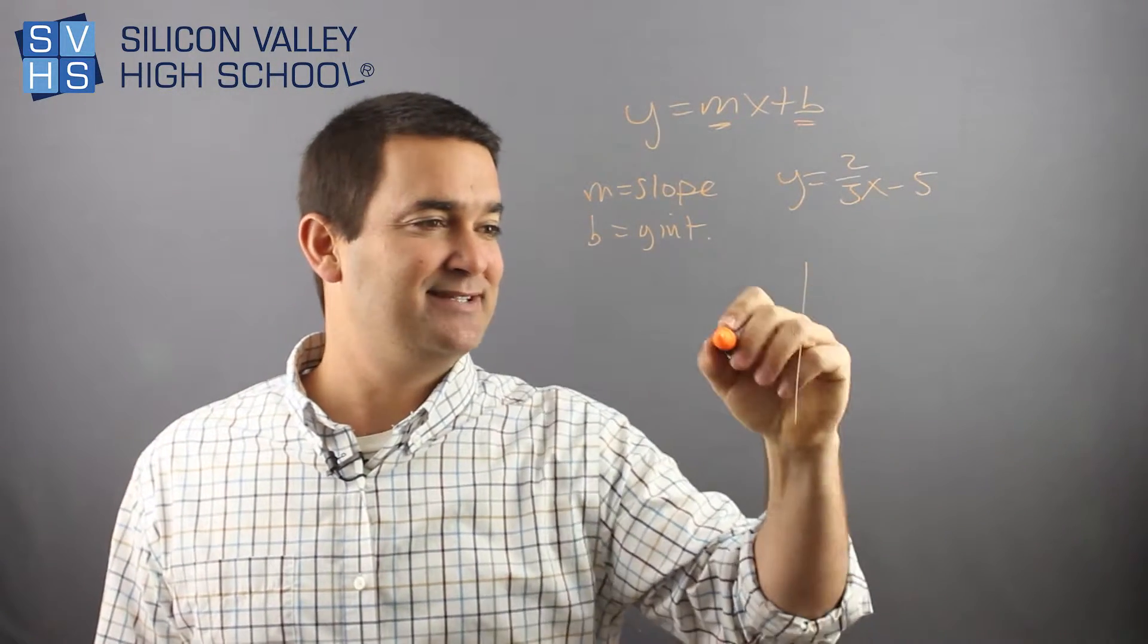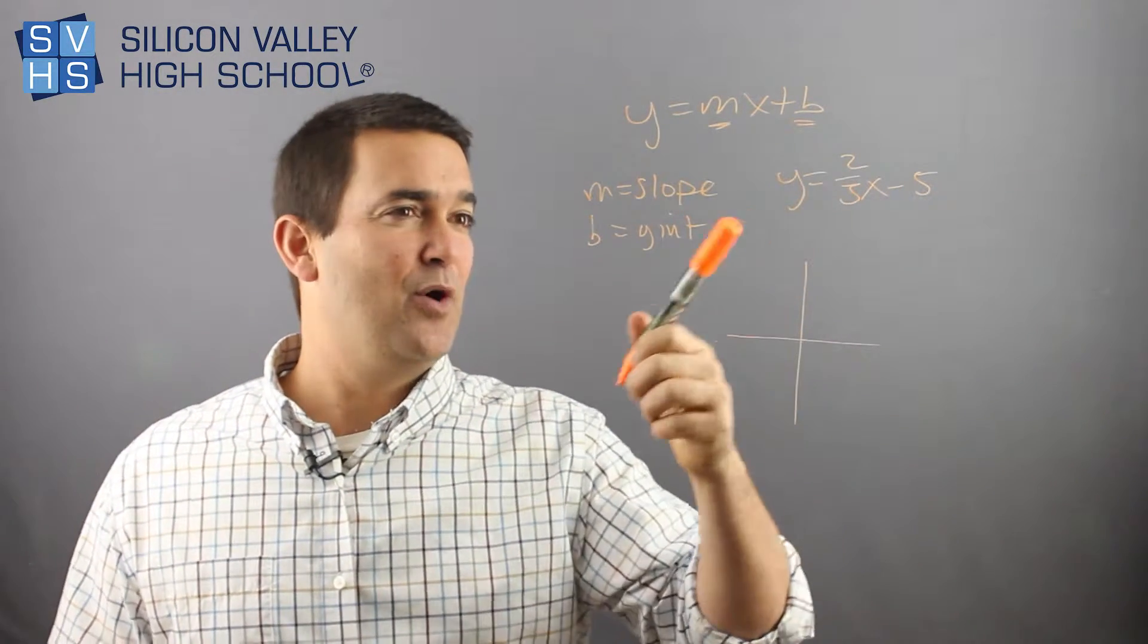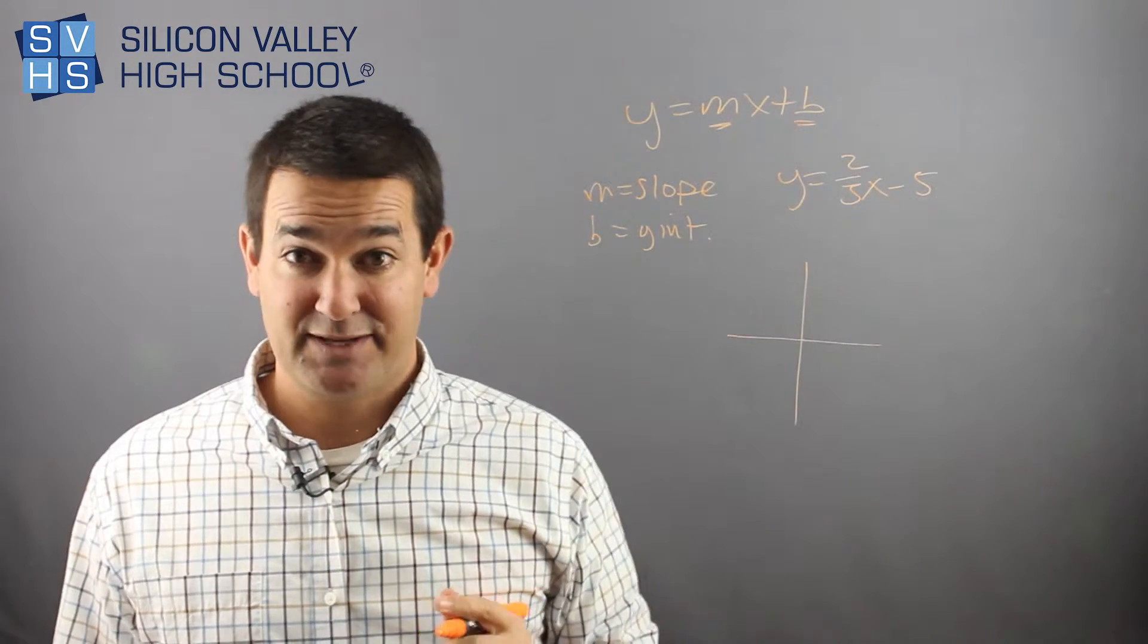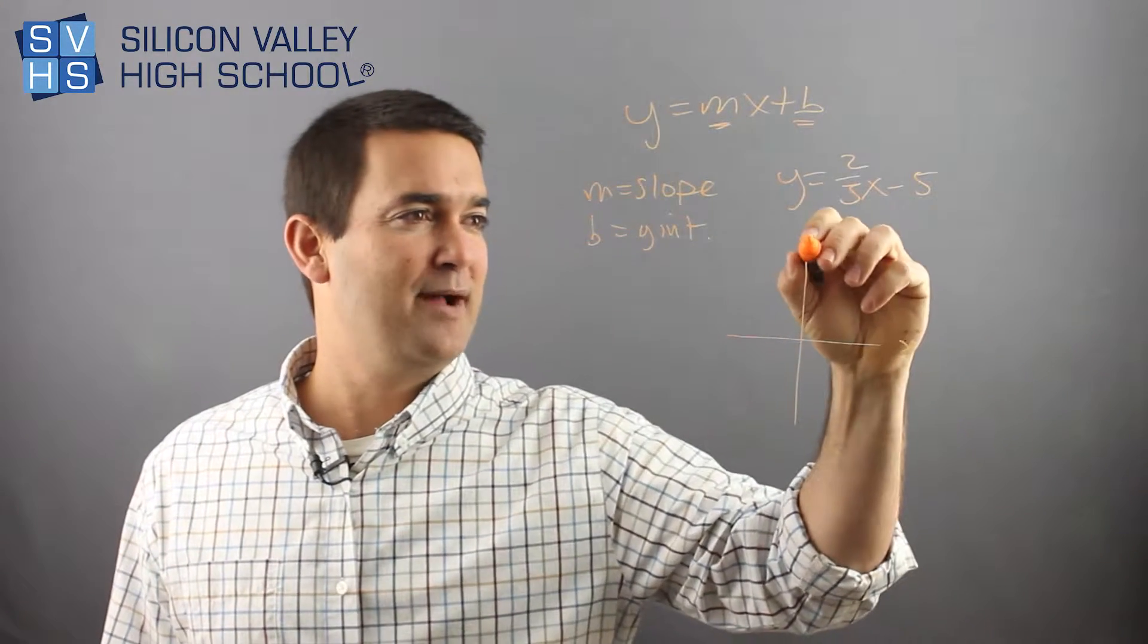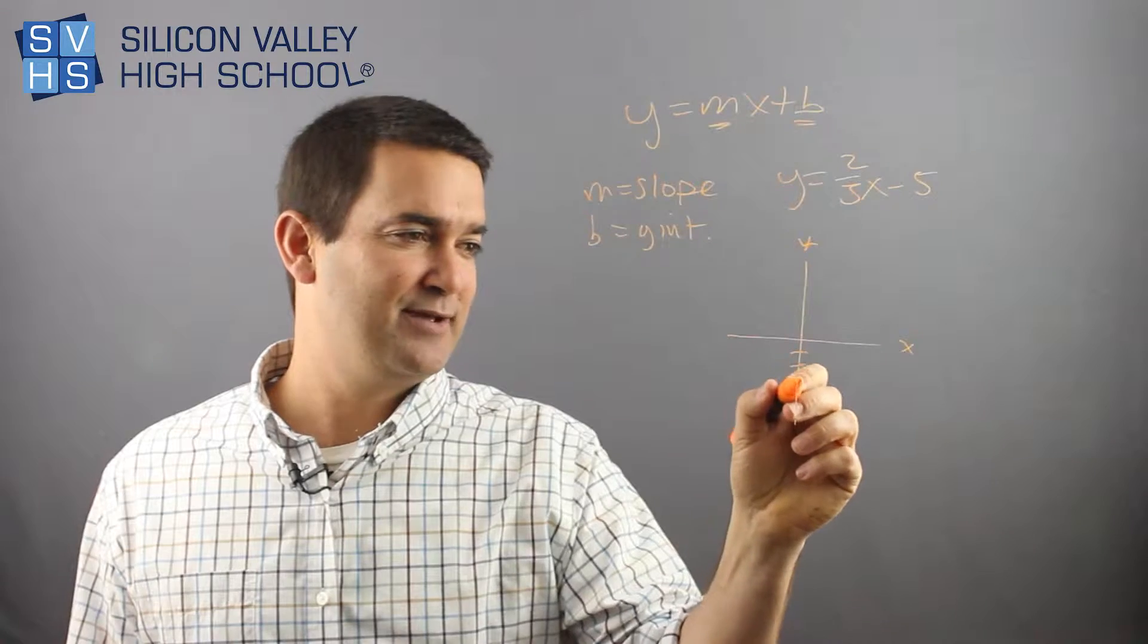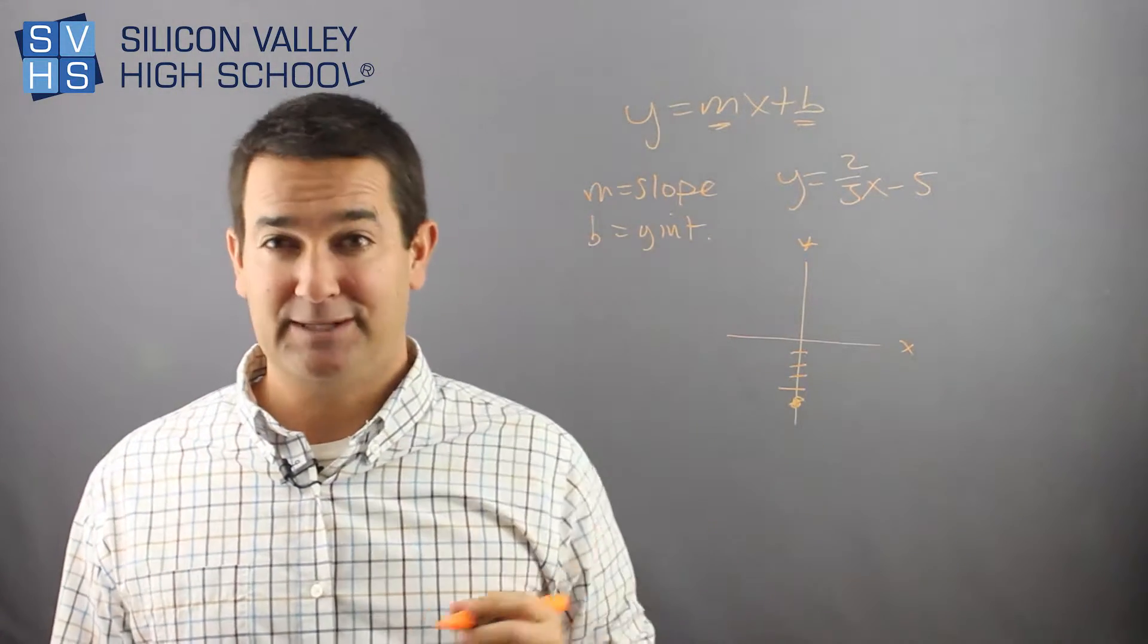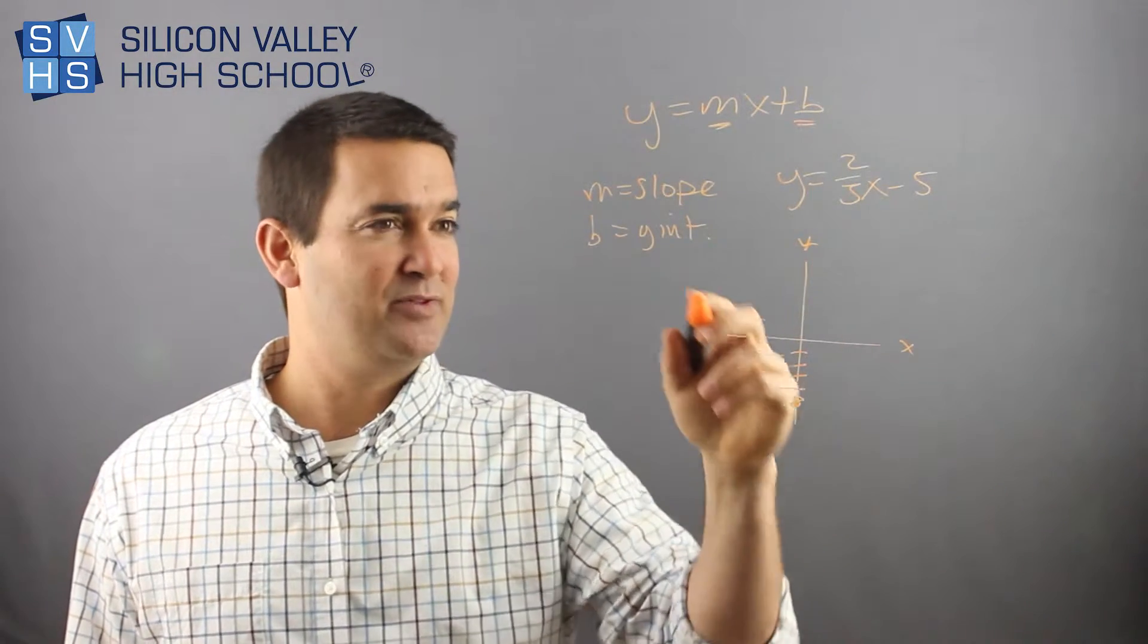Okay, so if we graph this, it's actually pretty mellow. You always start at your b, your y-intercept. If my y-intercept, which literally means where it intercepts the y, remember x, y. If it intercepts the y at negative 5, you just go down 1, 2, 3, 4, 5 and put a huge point. So that's where you start. Every single time you start at the y-intercept.